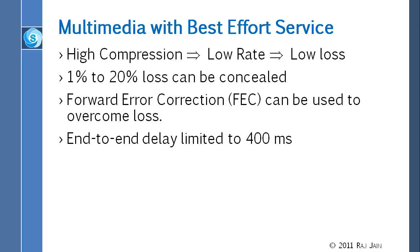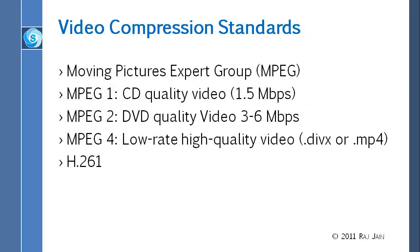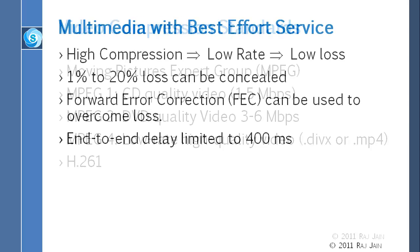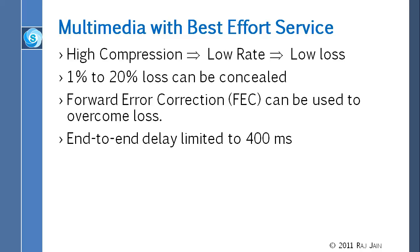It was not always that low rate before. As you noticed from MPEG 1 to 4: MPEG 1 was 1.5 megabits — you couldn't do much video on the net. MPEG 4 is in kilobits, so we are all watching video now because it is in kilobits. The reason it has become better is because of compression. Now we have better compression techniques, which makes it low rate and low loss.